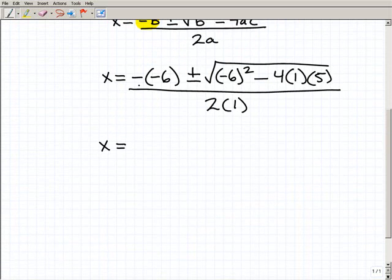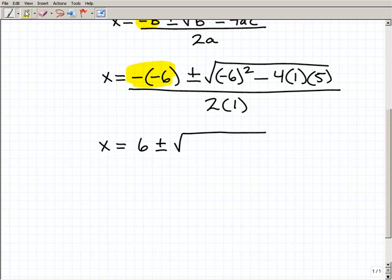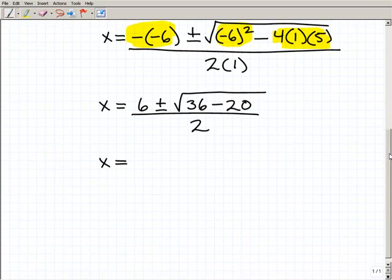And so now we have x equals minus minus 6. The opposite of a negative 6 is a positive 6. Plus or minus the square root of, minus 6 squared is what? What's negative 6 squared? All right, that's going to be a positive 36 minus 4 times 1 times 5. 4 times 1 times 5 is going to be 20, all over 2 times 1, which is 2. So you see how I'm just kind of working it step by step? That's exactly what you want to be doing.